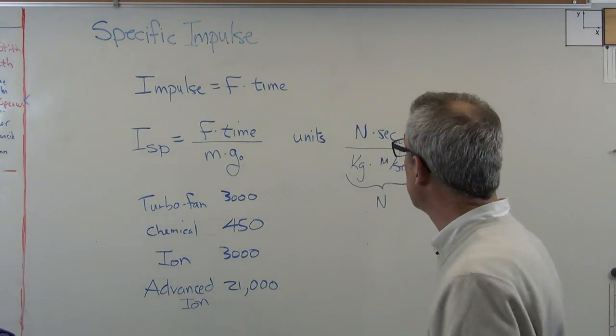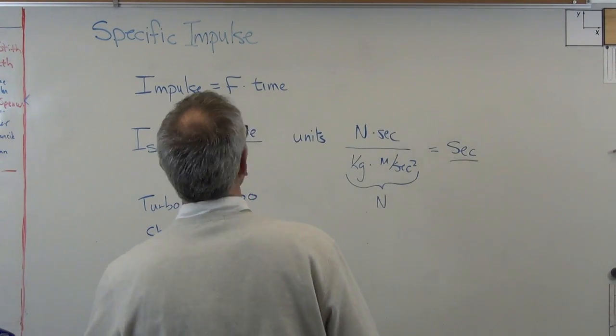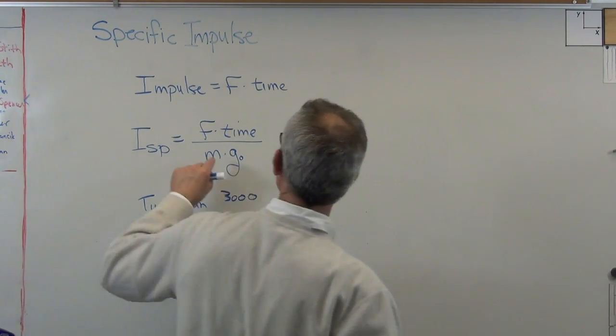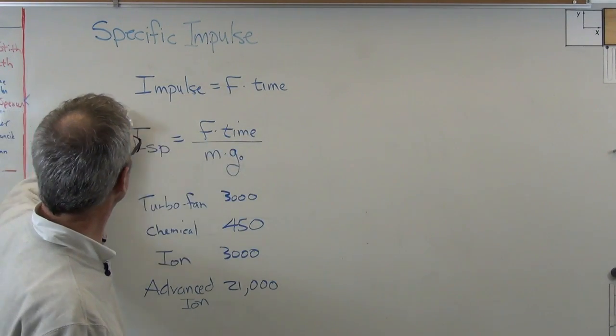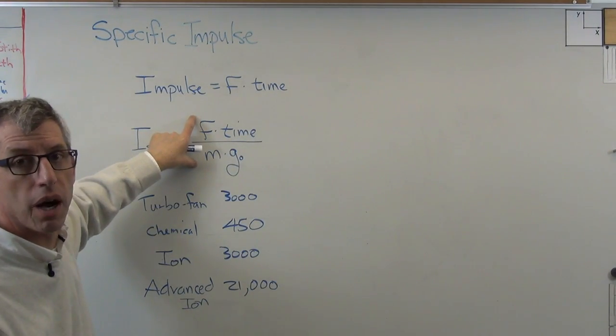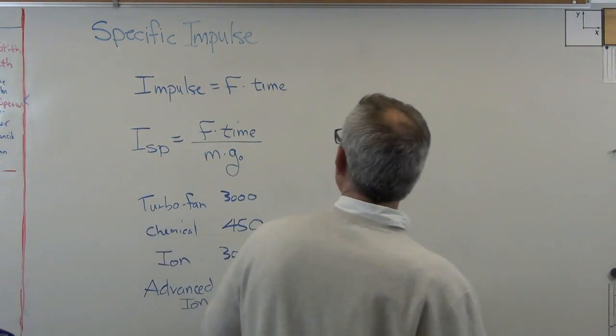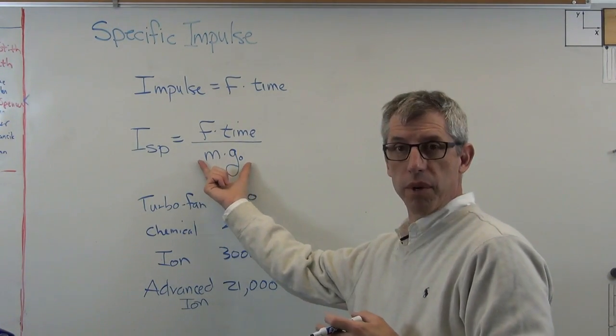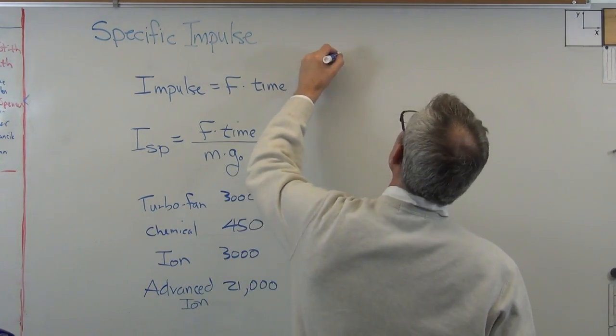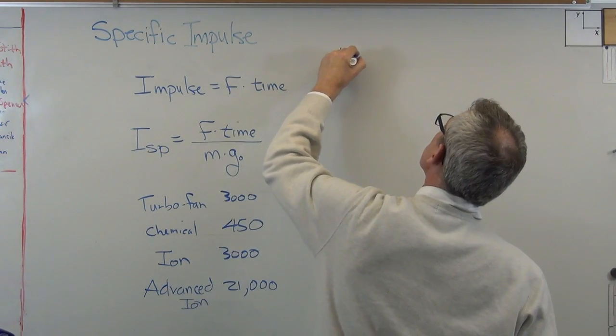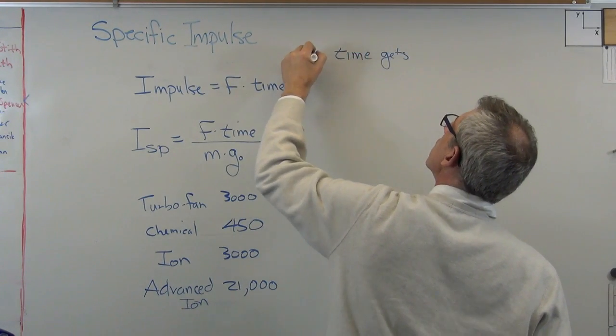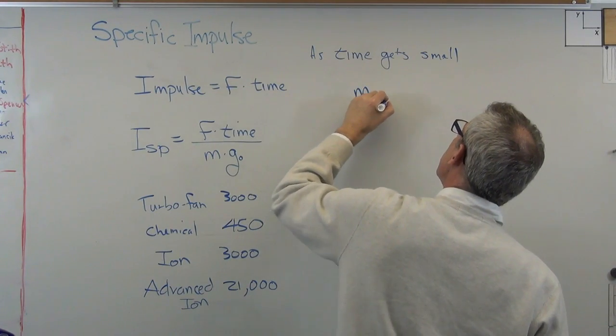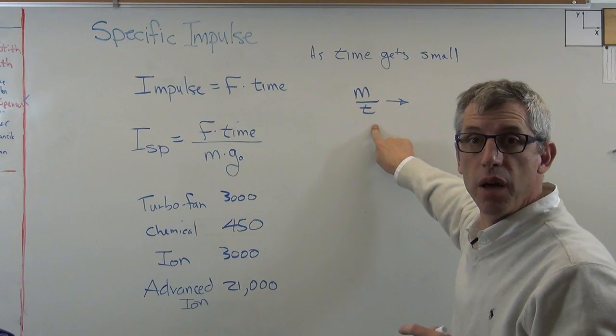There's one last thing I want to tell you about right now. If time gets really short, this is over some unit of time, and I specifically said this is for constant conditions. Well, conditions aren't always constant. If time gets really short, and so the amount of fuel you use in that time represented by that is also small. What'll happen is, is time gets small, then m over t...